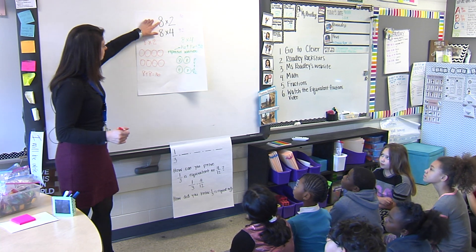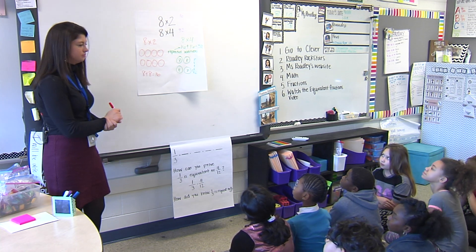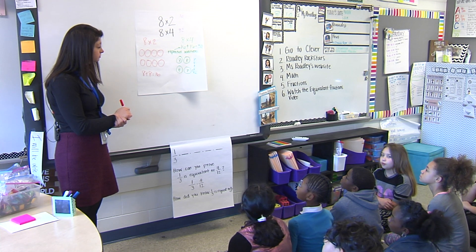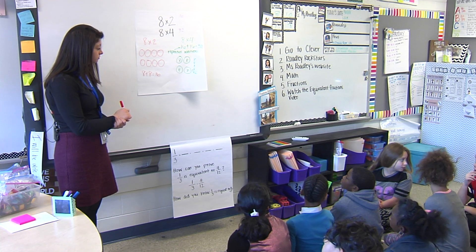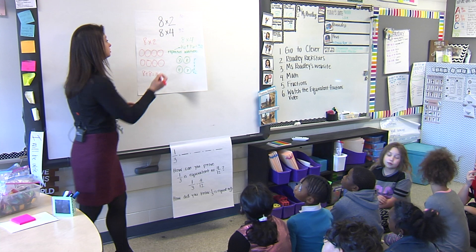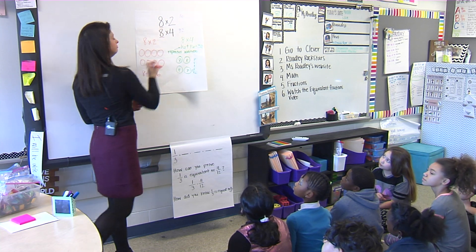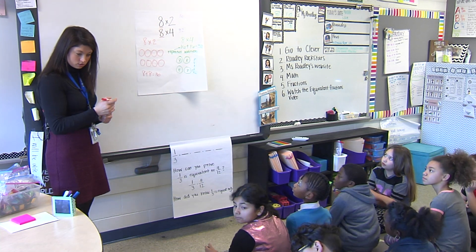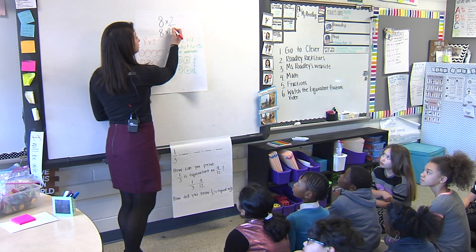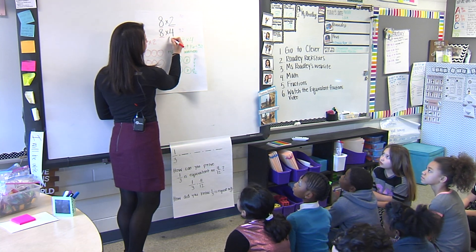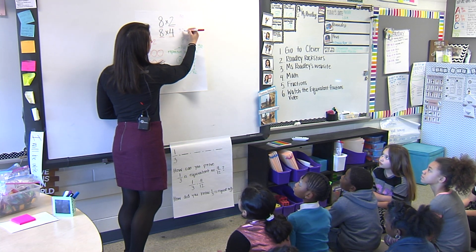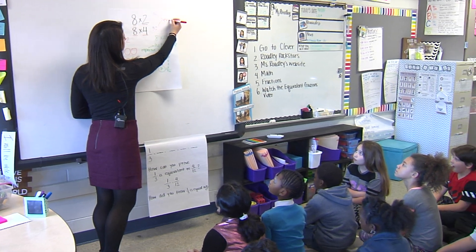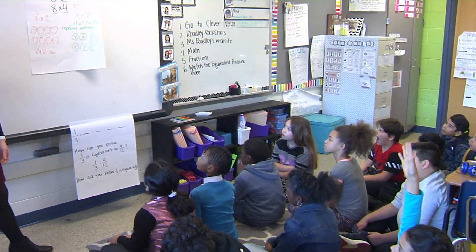What can you tell me about these two facts and how they're related? Jayden? Because the first number is both eight — they have that in common. What else can you tell me? They're both even. These two numbers are both even, and the answer is both even. All numbers are even, in fact.